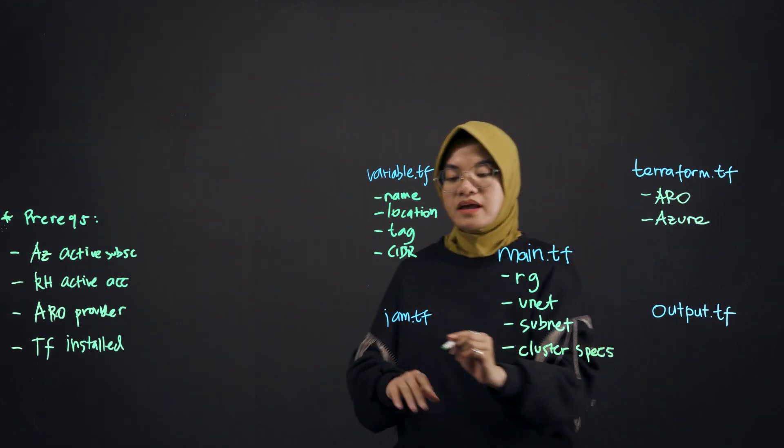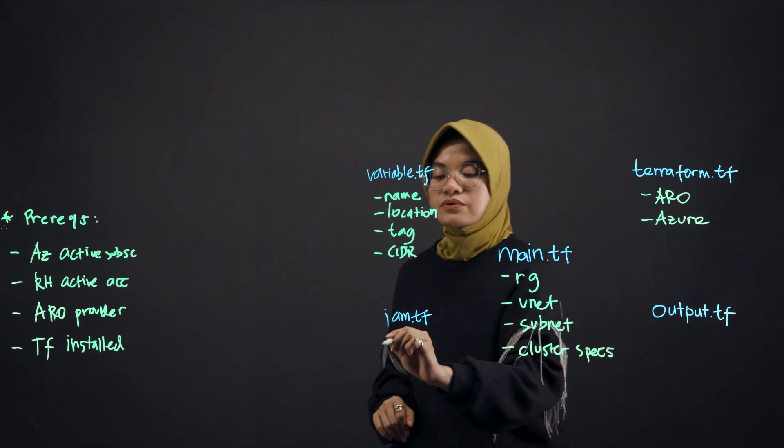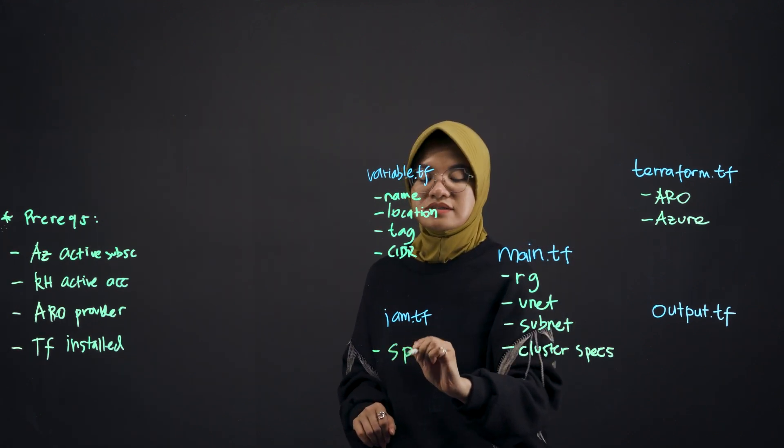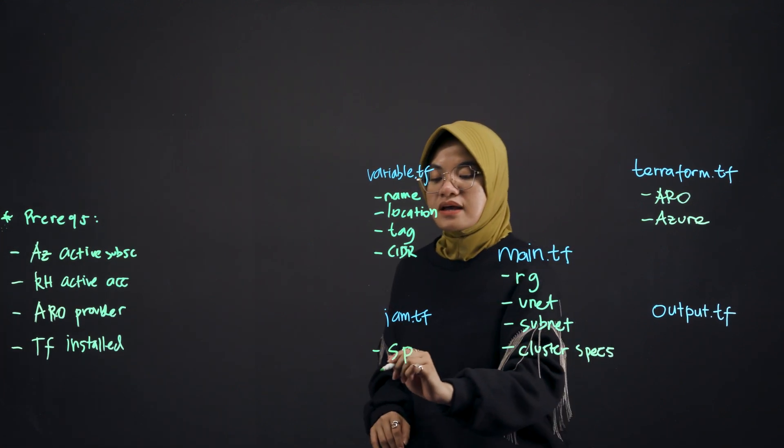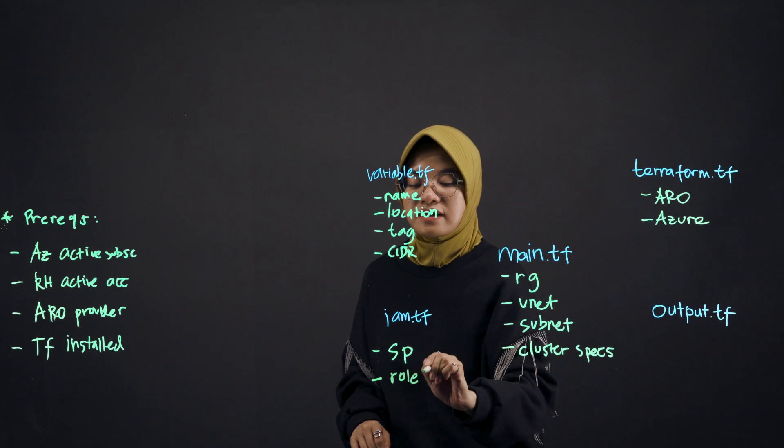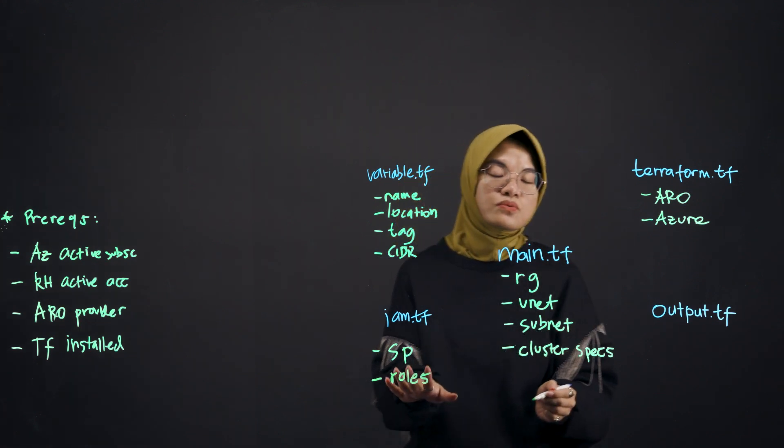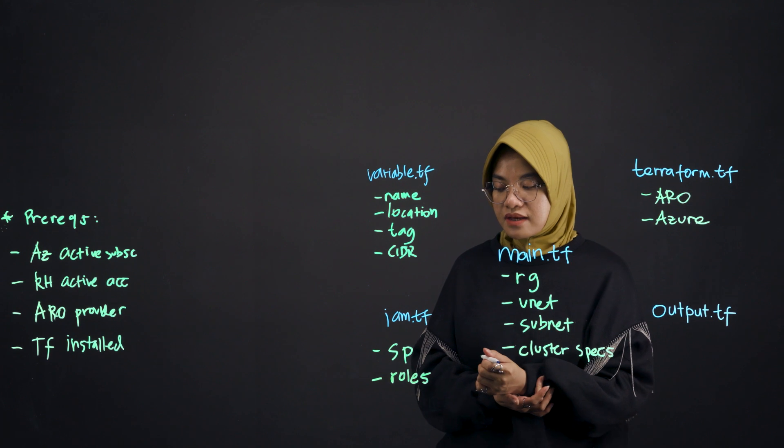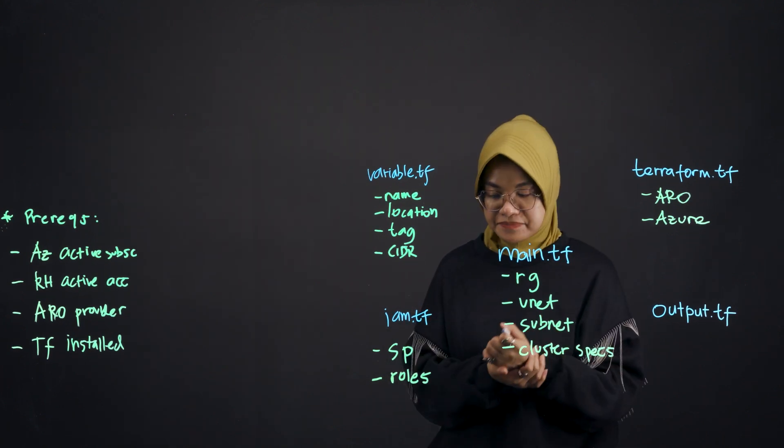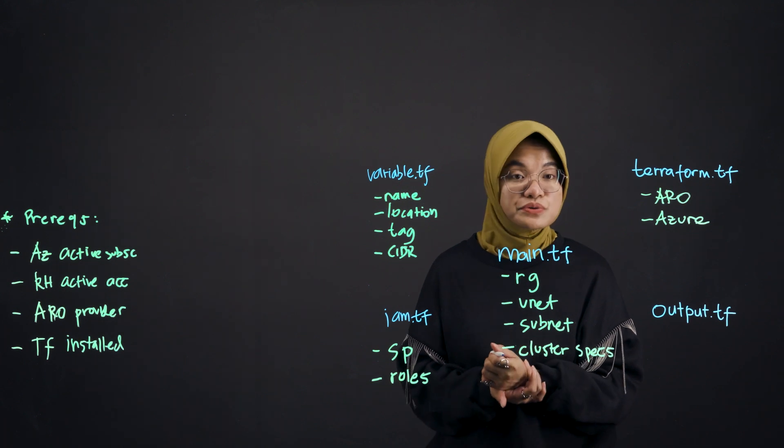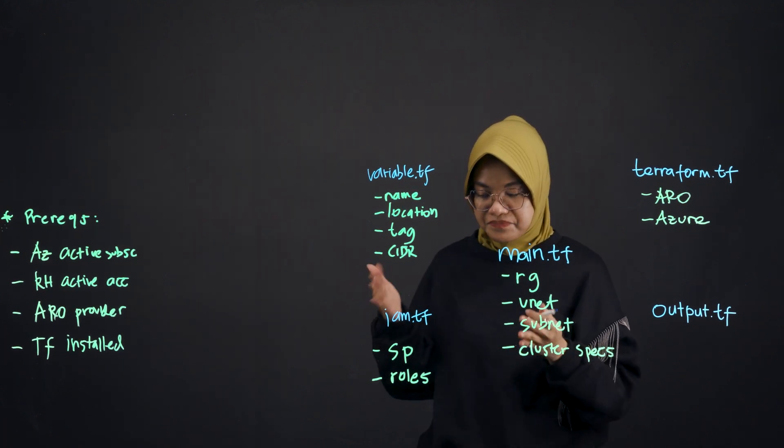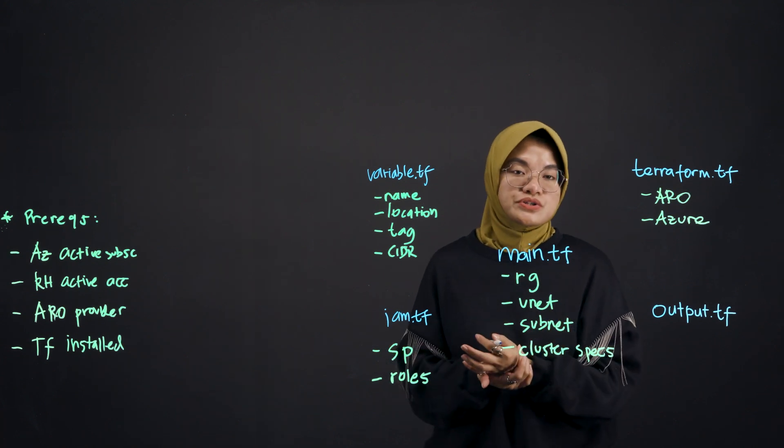And then here in the iam.tf, here you will actually create what we call service principle, abbreviated as SP. And also here you will do roles and assignments. For example, you want to assign your contributor role to the resource group, and then you want to also assign your network contributor to your VNet.